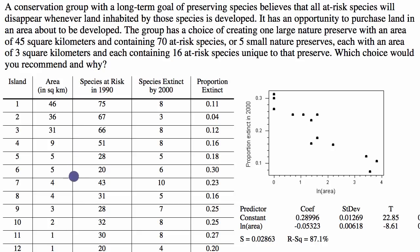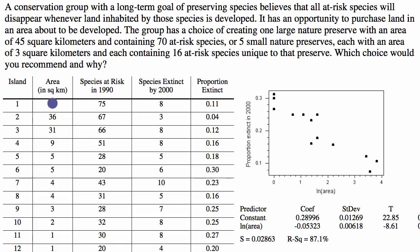There is some interesting data here — it looks like data gathered for different islands. We have their areas, the number of at-risk species in 1990, and the species extinct by 2000. For these various islands we can see their areas and the proportion that went extinct, and it looks like they are plotted on this scatterplot.